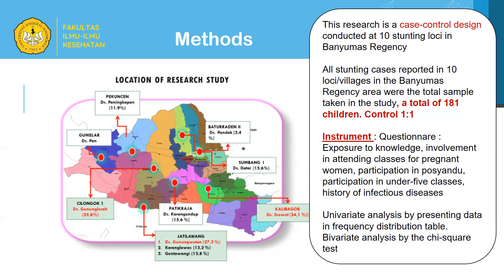We took all of the cases — a total of 181 stunting children as cases — and also 181 control children with normal growth. The comparison is one-to-one between the cases and the control. For data collection, we used questionnaires covering exposure of knowledge, involvement in attending classes for pregnant women, participation in posyandu, participation in under-five classes, and history of infectious disease. Data analysis was done by univariate analysis presenting data in frequency distribution tables, and bivariate analysis using the chi-square test.